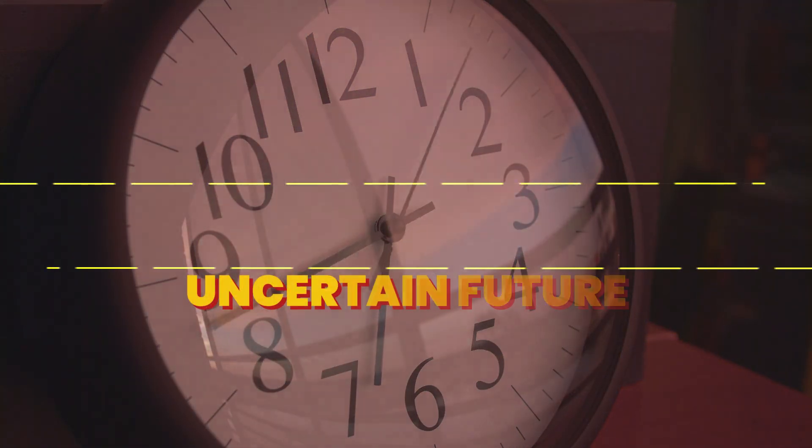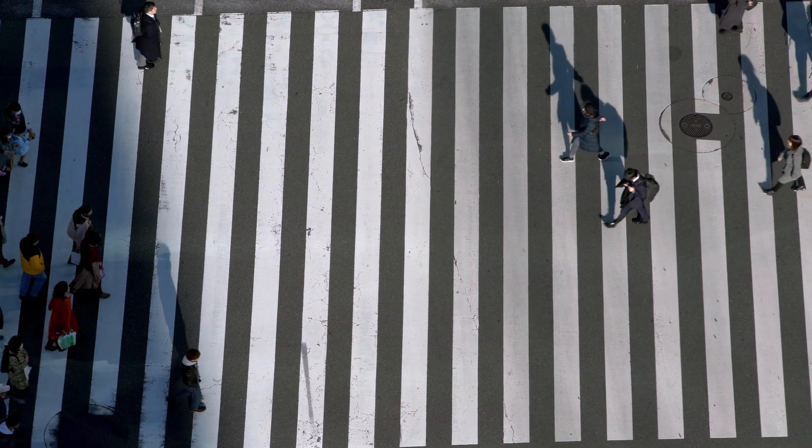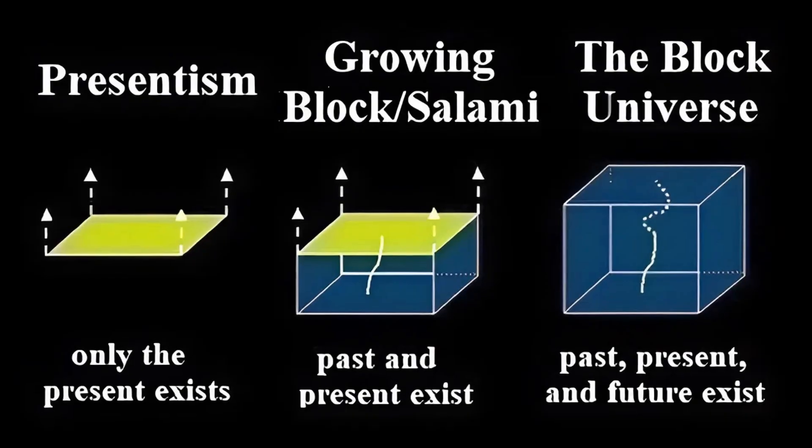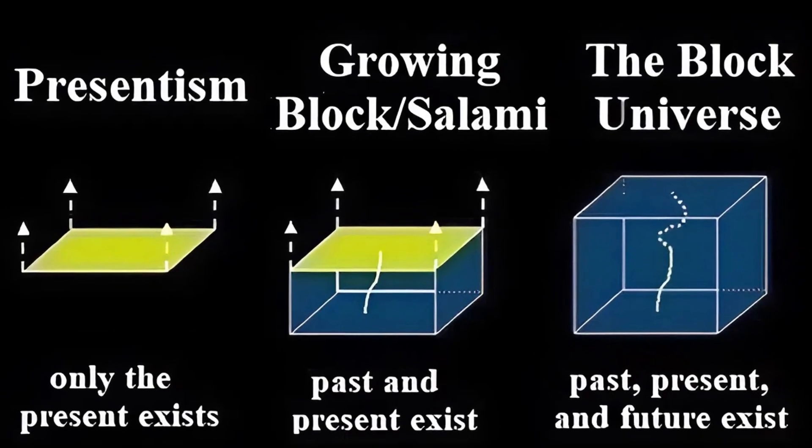We feel like there is a moving present moment, a thin line between an uncertain future and an immutable past. Yet earlier we saw that relativity forbids a single universal present that everyone agrees on. So what gives? Is there a now or not?